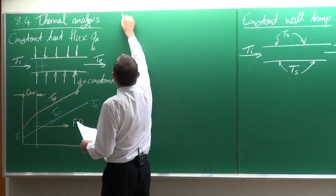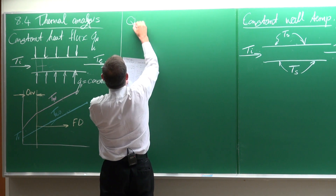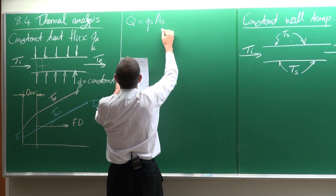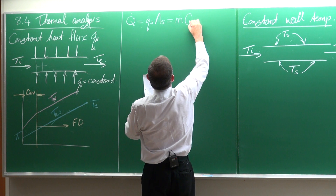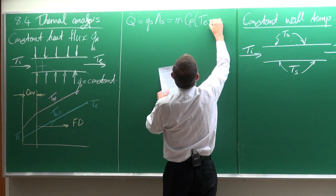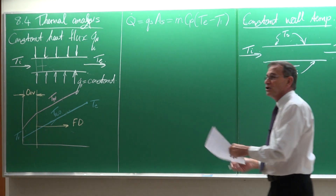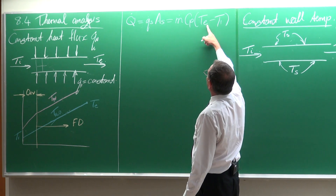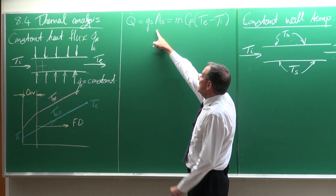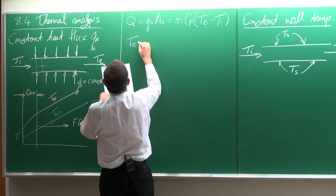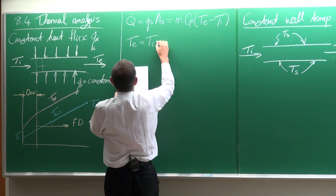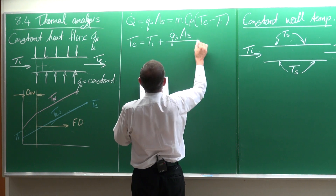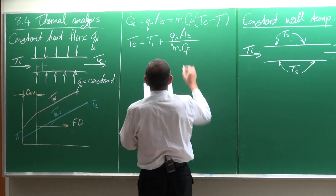If you go and do a thermal analysis, you can say that the heat transfer rate is equal to the heat flux multiplied by the surface area of the tube, and that is equal to the mass flow rate multiplied by Cp multiplied by the outlet temperature minus the inlet temperature.